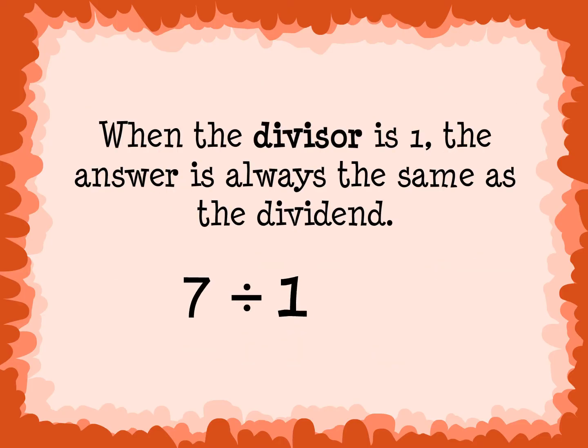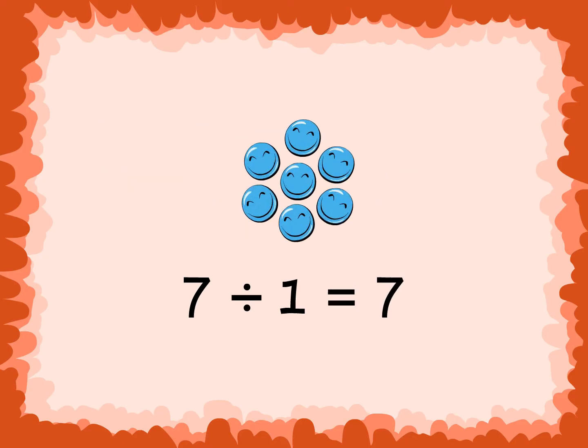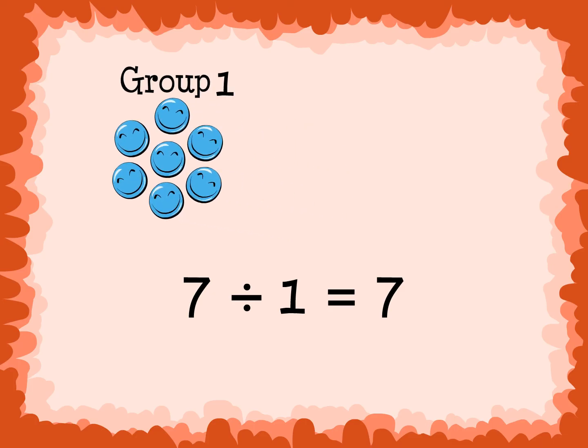When the divisor is 1, the answer is always the same as the dividend. 7 divided by 1 is 7. There are 7 objects to divide equally between one group. That group gets all 7 objects. So the quotient would be 7.